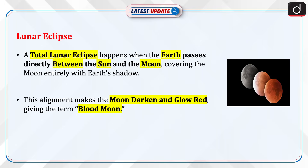Now let's discuss about lunar eclipse. A total lunar eclipse happens when the Earth passes directly between the Sun and the Moon, covering the Moon entirely with Earth's shadow. This alignment makes the Moon darken and glow red, giving the term blood moon.